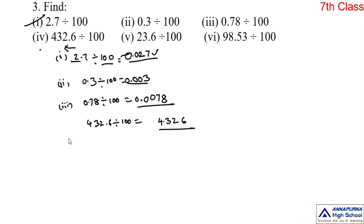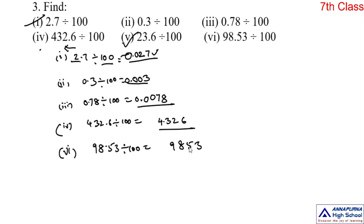Can you do problems four and five as homework? Let me explain the sixth one. So, 98.53 divided by 100. All are same — procedure is same. Ignore the decimal point and write the number. The decimal point is between 8 and 5. We are dividing by 100, so two zeros are there. Count two digits towards left: 1, 2, put point. There is no digit in the whole part, put zero. The answer is 0.9853. Like that, we can divide any decimal number by 100.